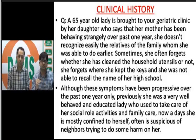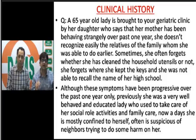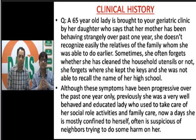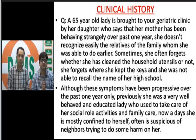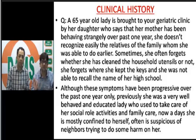These symptoms have been progressive over the past one year — that indicates progressive degeneration. Previously she was a well-behaved and educated lady who took care of social and family activities. Nowadays she is mostly confined to herself, showing behavioral symptoms. She is also suspicious that neighbors are trying to harm her, which is a psychotic feature called delusion of persecution.